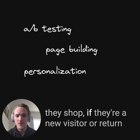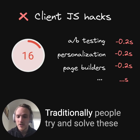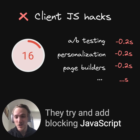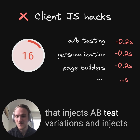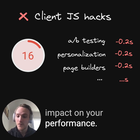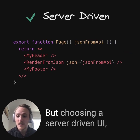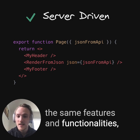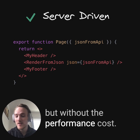What they browse, what they shop, if they're a new visitor or a return visitor, etc. Traditionally, people try and solve these problems with JavaScript hacks — they try to add blocking JavaScript that injects A/B test variations and personalizations, and those things have a negative impact on performance. But choosing a server-driven UI as an alternative can give you all of the same features and functionalities, but without the performance cost.